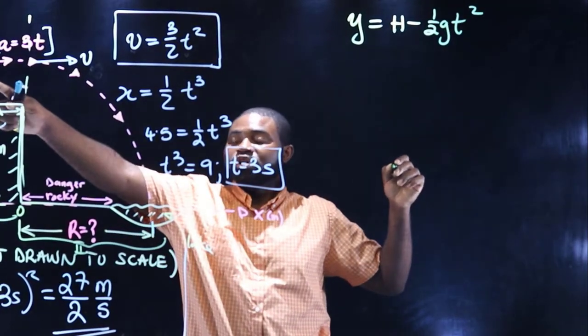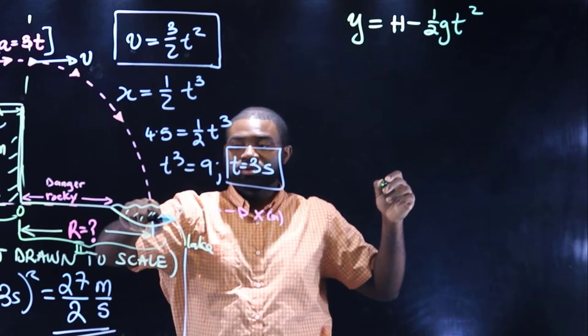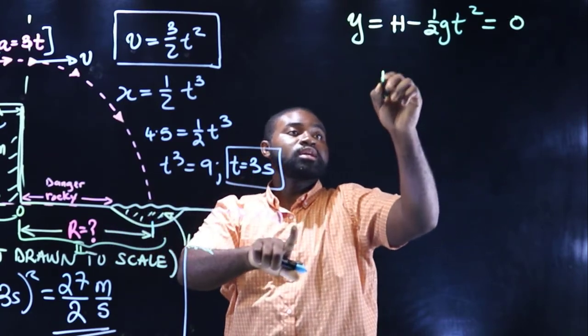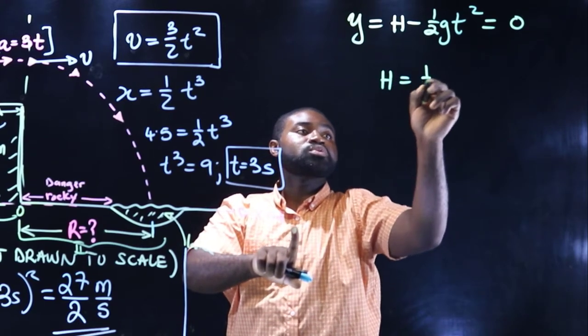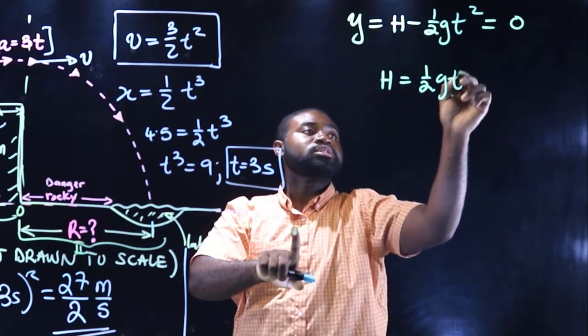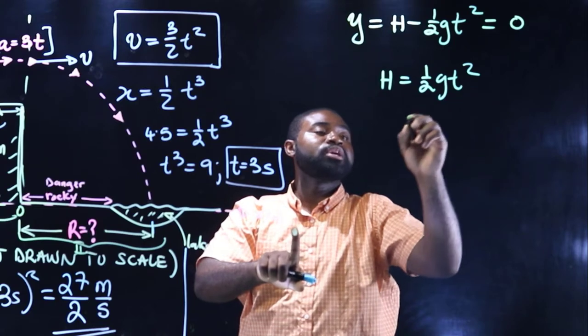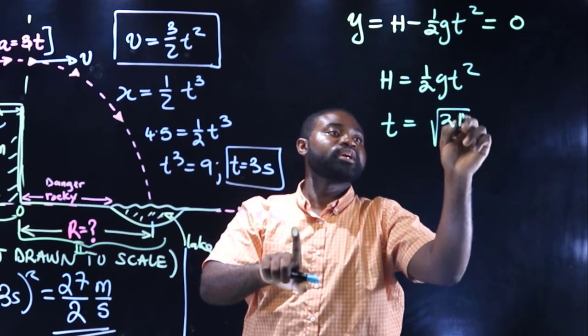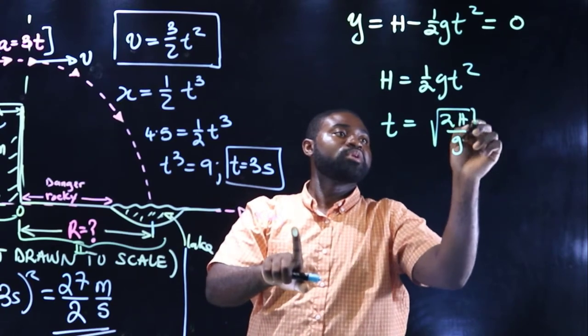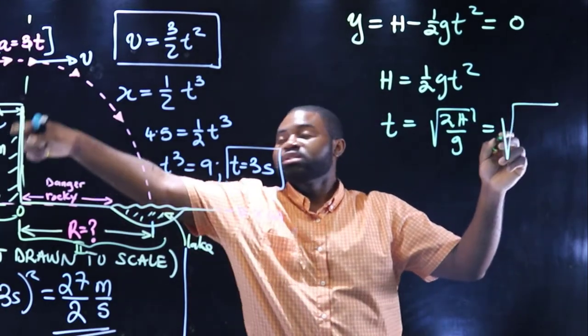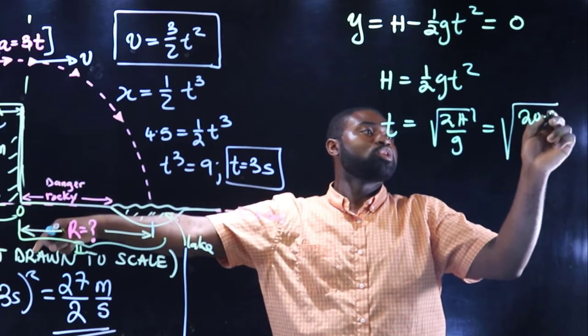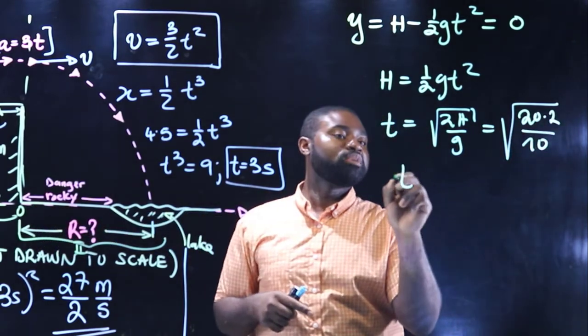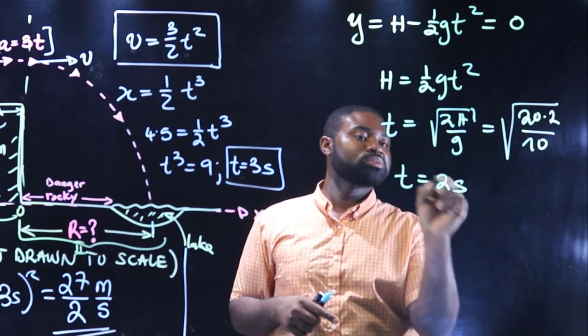When Johnny hits the pond, what happens is that y is equal to zero. In that case, h will be equal to one-half g t squared, which means that t is equal to the square root of 2h over g. What is h? h is 20 multiplied by 2 divided by 10. So this would mean that t is equal to two seconds.